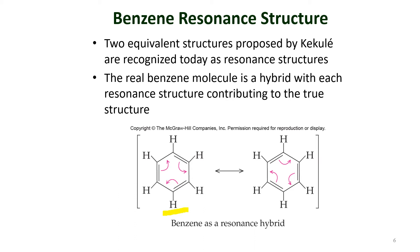The benzene molecule can exist in two resonance structures, where the difference between the two forms is mainly the location of the double bonds. These two equivalent structures are known as resonance structures. This idea was proposed by the scientist Kekulé, who said the real benzene molecule is a combination of both structures — the true structure is a combination of both, not one or the other.